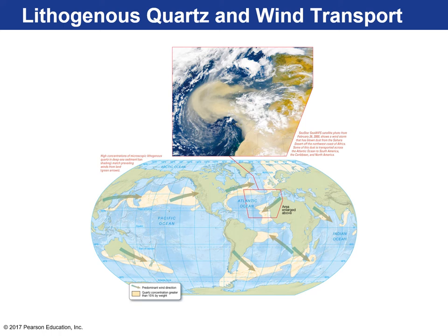One example of lithogenous sediment transport is Saharan dust being delivered to the Atlantic Ocean via global wind belts — specifically the trade winds blowing over the African continent. These plumes of very fine sediment sometimes make it all the way to the Caribbean and Florida, causing allergic reactions in some people and making sunsets and sunrises pinker and hazier. One of the most resilient minerals in rocks is quartz (SiO₂), so much lithogenous sediment is quartz-rich.